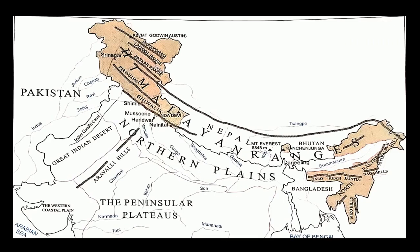Towards the south of the Karakoram range are the Ladakh and Zaskar ranges, as you can see on the map. The Indus River in the Kashmir region flows between these two ranges — the Ladakh and the Zaskar range.